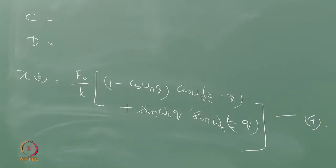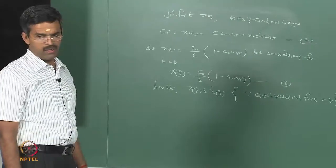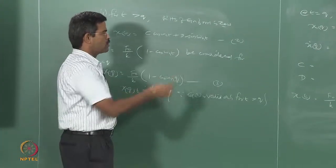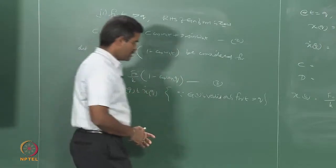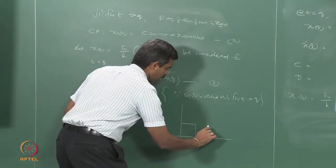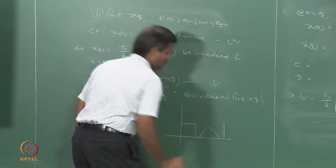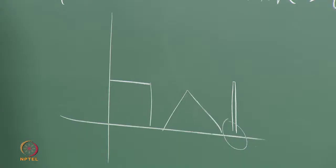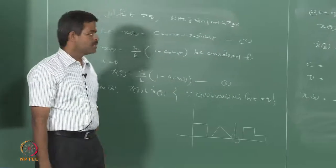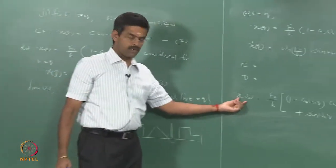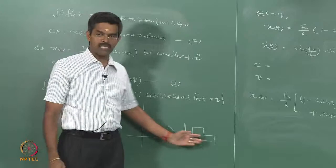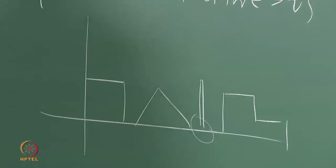You can solve the problem from first principles to find x(t) when an impulse function is applied for a short duration from 0 to q. Divide the problem into two parts. This function can be of any nature - it can be rectangular, a triangular impulse, a very short-duration impulse called a Dirac delta function, or a step function. You should be able to solve the response of a single degree of freedom system for a given right-hand side of the equation of motion by dividing it into the appropriate number of segments.